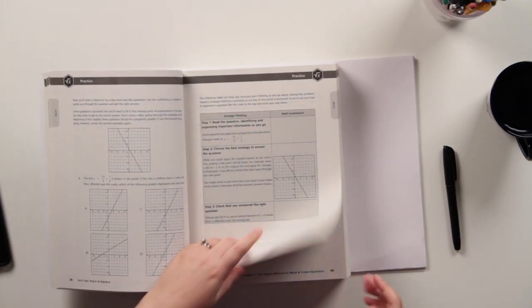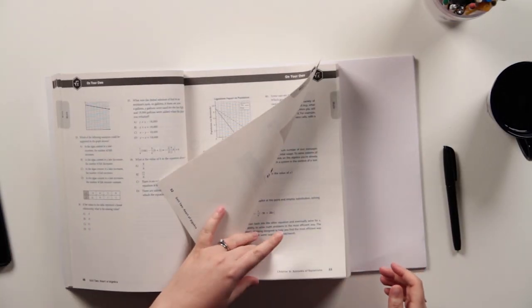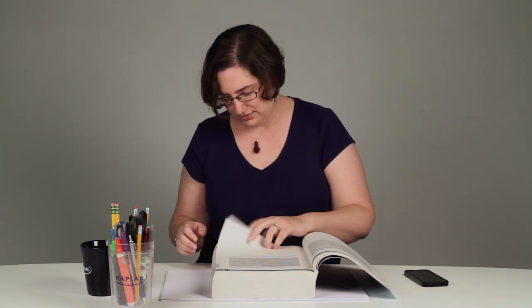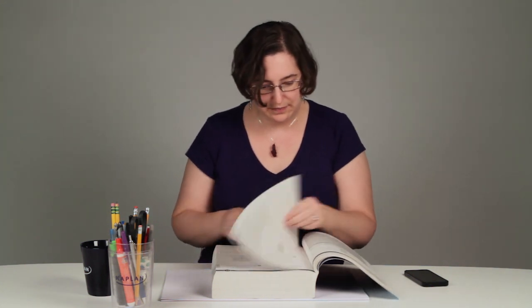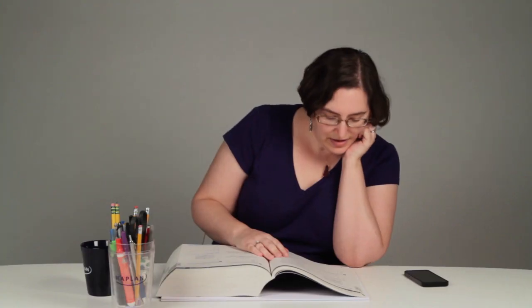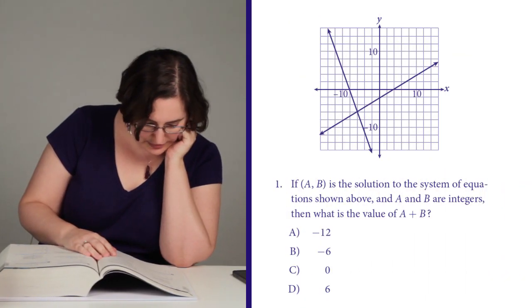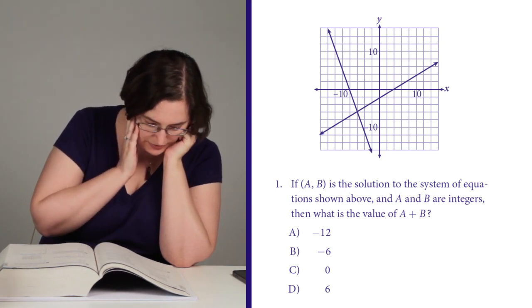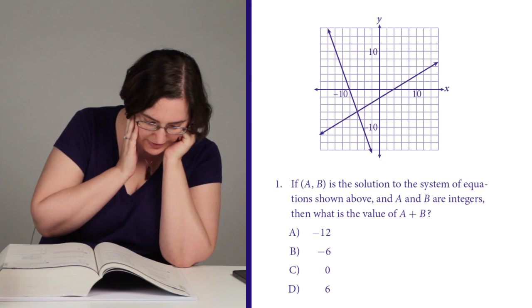Page 68, question number one. Let's see what we've got. If (a, b) is the solution to the system of equations shown above and a and b are integers, then what is the value of a plus b?